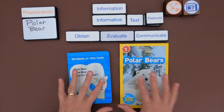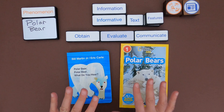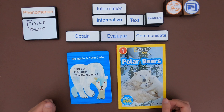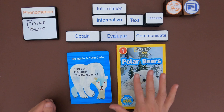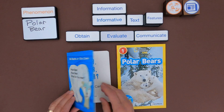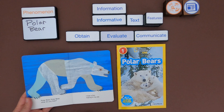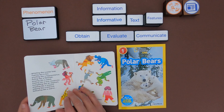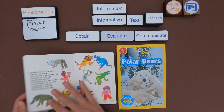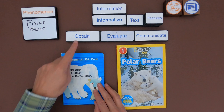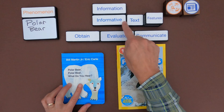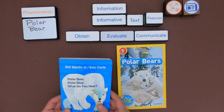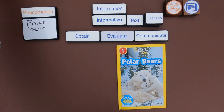The first thing I want to determine is whether these texts are informative texts — meaning text designed to give you information. A big indicator is that informative texts are always nonfiction. Looking at this first text, 'Polar Bear, Polar Bear,' one of my favorite books — it's got information on a polar bear, it has some drawings, and at the end you have a zookeeper and a polar bear growling. As I look at this, I don't think this is an informative text. It's not designed to give us factual information and it's not nonfiction, so I'm going to remove this.